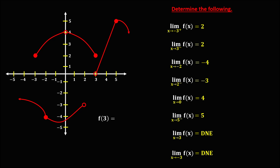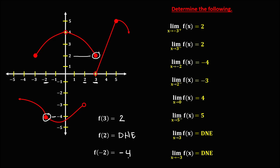Now to evaluate the function values, for f of positive 3, we just need to look for the shaded circle. For x equals positive 3, this is the shaded circle. Then for f of negative 2, this is x equals negative 2, and this is the shaded circle. Therefore, f of negative 2 equals negative 4.